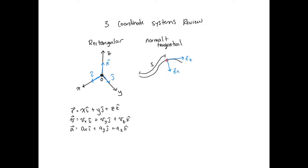Since the unit vector et is going tangent to the path of motion, that's also the direction of velocity by definition, because velocity is tangent to the path of motion. This means your velocity vector would be equal to whatever your speed is — your speed v — all going in that tangential direction. There is no speed in the normal direction. The normal direction really comes in when you're looking at acceleration. The acceleration is equal to your change in speed over time in the et direction, plus your speed at that moment divided by the radius of curvature in the en direction.